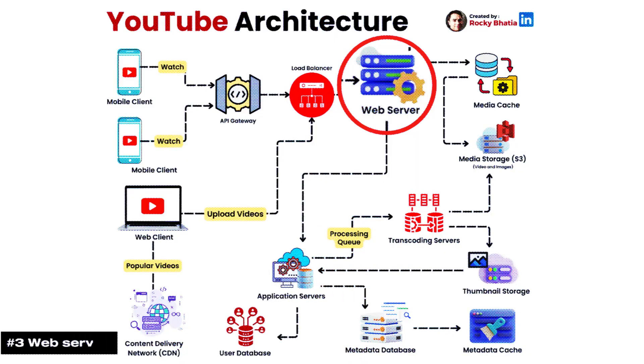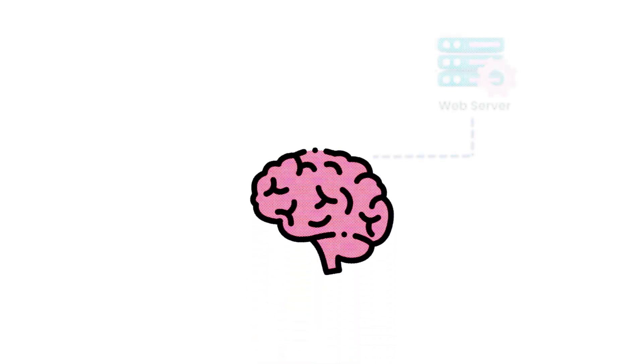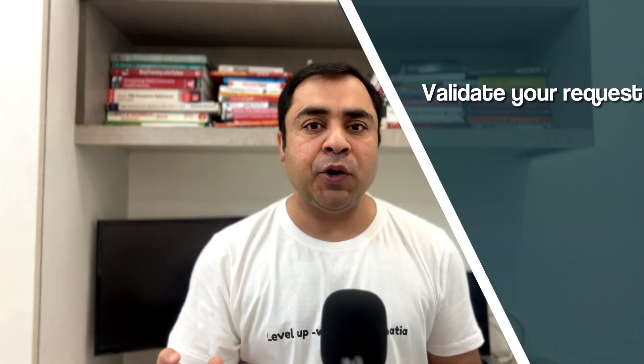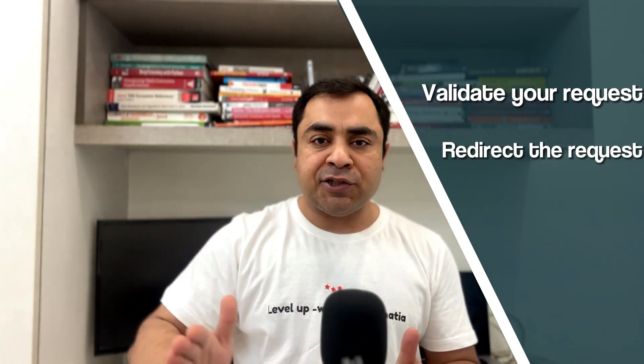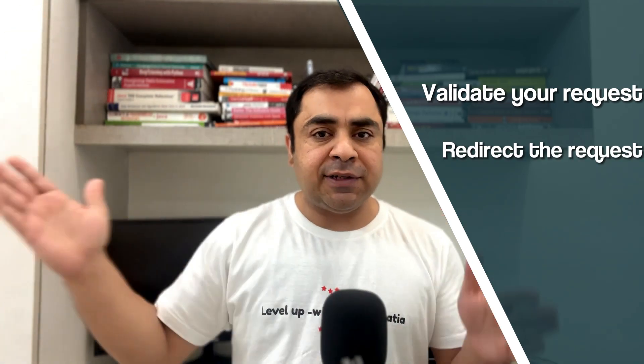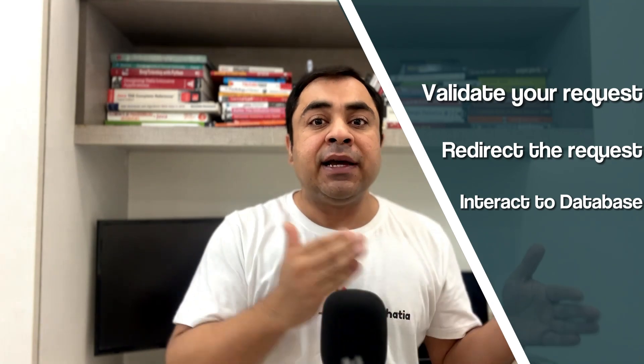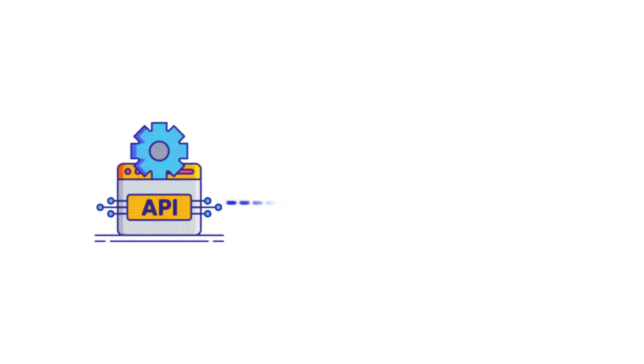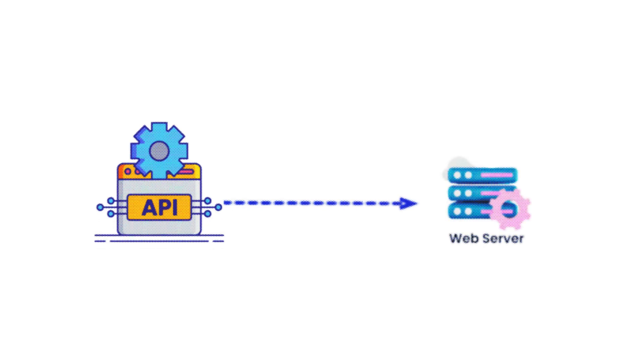Now the request is hitting the backend. There you have a web server, which behaves like the brain of the application — it holds all the business logic. It will validate your request, redirect it to other services, and interact with databases. Web server is a very popular component, and whatever APIs we are dealing with, those APIs at the backend interact with the web server.